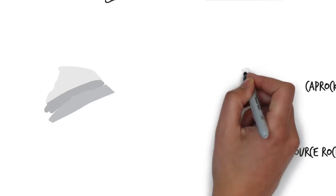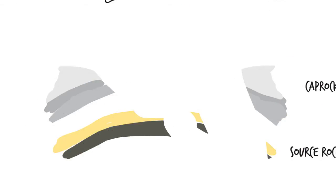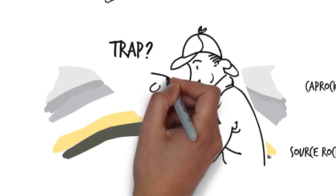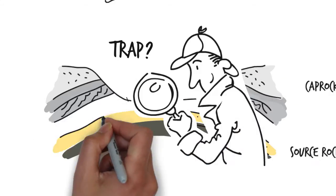Furthermore, a fifth element is needed. The trap. Finding subsurface traps is one of the main tasks during the exploration phase for oil and gas. So, how do we find them?